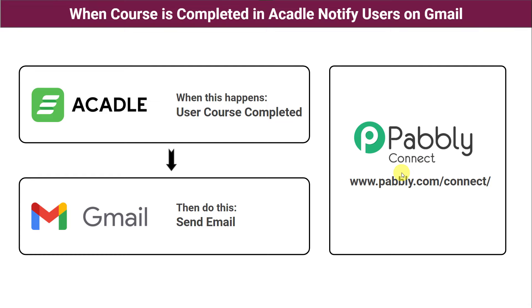First we have to create an integration between Acadle and Pabbly Connect. Then Pabbly Connect is going to capture all the course details and the user details. Using those details, automatically an email will be sent to the user that the course has been completed. In this way we are going to learn how to create an integration between Acadle and Gmail using Pabbly Connect.